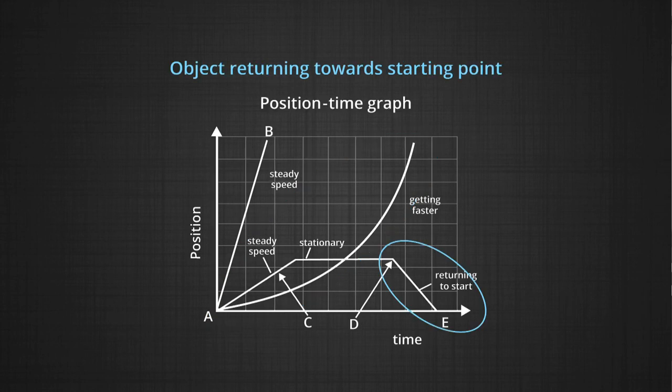What about the last section? The line going toward the time axis, though straight, means that the position has changed by travelling equal distances in equal intervals of time — uniform motion — and the object must be coming back to the original position.